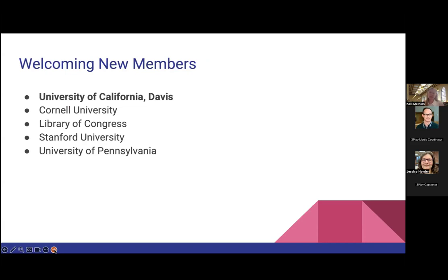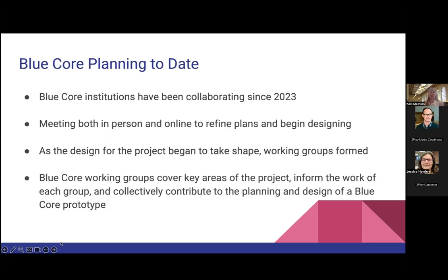At the BibFrame workshop in Europe, we officially announced that the University of California, Davis has joined the existing members of BlueCore, which include Cornell University, the Library of Congress, Stanford University, and the University of Pennsylvania. The BlueCore institutions have been collaborating since 2023, meeting both in person and online to refine plans and begin designing. As the design began to take shape, working groups formed naturally out of our discussions and have been working for the last several months. These working groups overlap with key areas and collectively contribute to the planning and design.